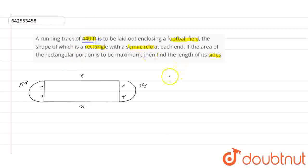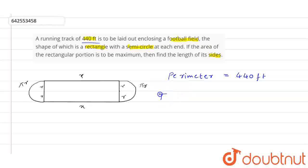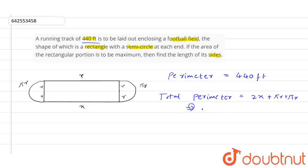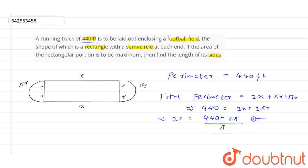Given that the perimeter is equal to 440 feet. If we find the total perimeter, that is 2X + πR + πR = 440. From here we can say that 2R is equal to (440 − 2X) / π. Let's say this is equation 1.